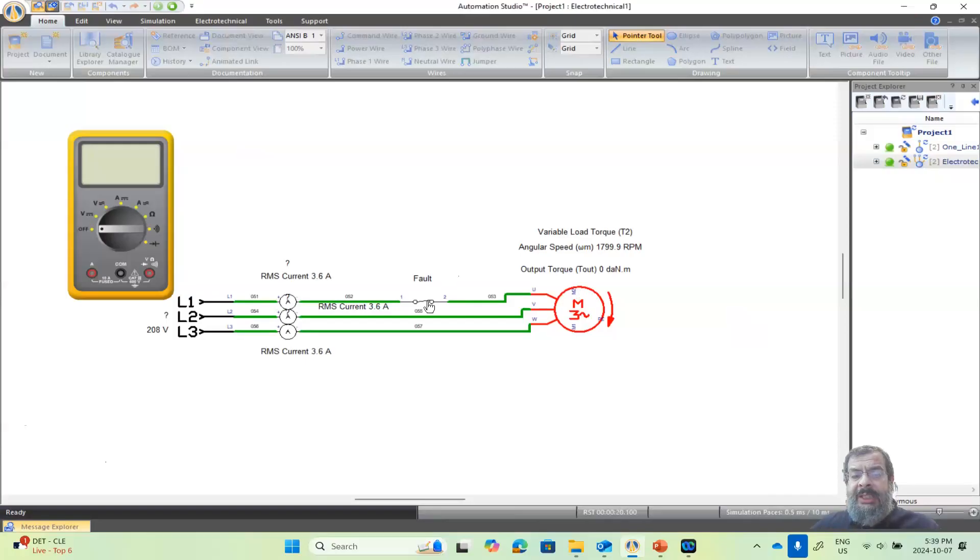Now let's see what will happen if I disconnect one of the phases, meaning a fault happened here. Look at the currents here: the current becomes high, low, high—high currents. And look at the speed here and the torque. You start to have a pulsating system or pulsating torque.